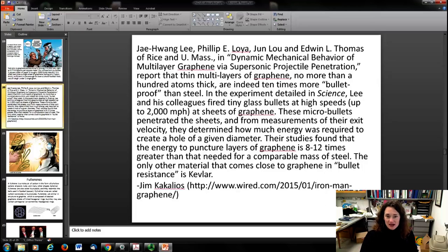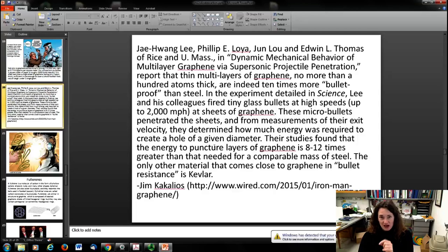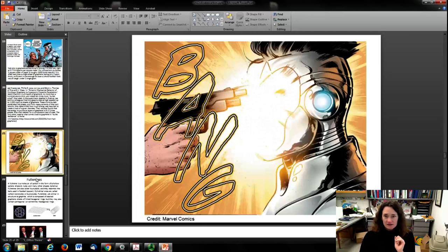Okay, so these guys I cite, what happened is they had these little glass bullets that they shot at graphene sheets and measured the speeds of the bullets before and after they came out of the graphene. The micro-bullets penetrated the sheets, and from measurements of exit velocity, they figured out how much energy was required to punch through the graphene. In their study, they found that the energy required to puncture layers of graphene was 8 to 12 times greater than the energy required for a comparable mass of steel, and the only material that's better at being bulletproof would be maybe Kevlar, which would come close but maybe not beat it. So there you go, Iron Man, you're safe.